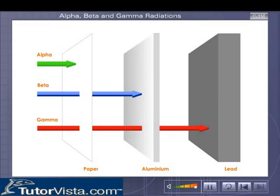The gamma rays move with a very high velocity. They have high penetrating power. They can pass through a thick aluminium foil but cannot pass through lead.